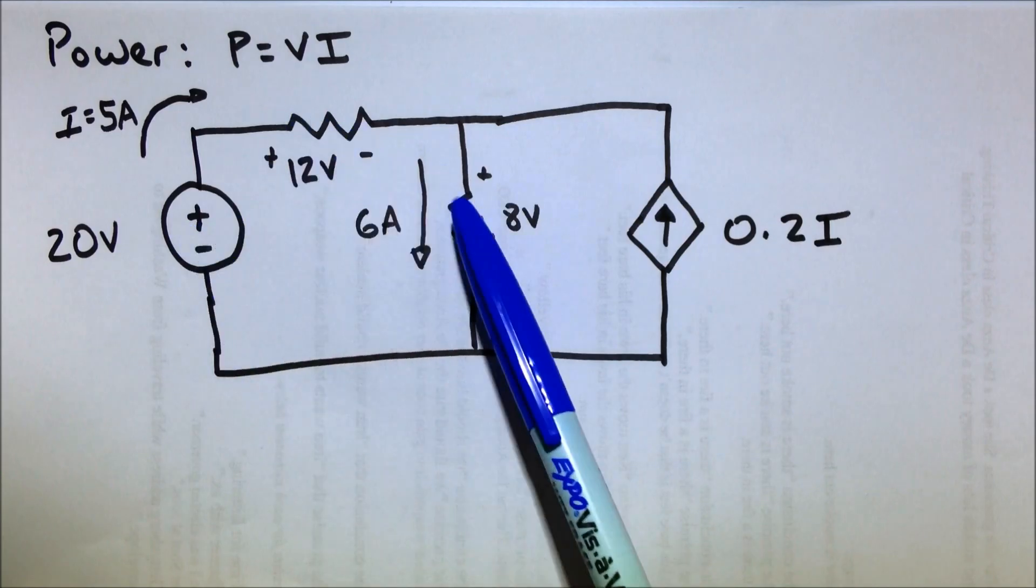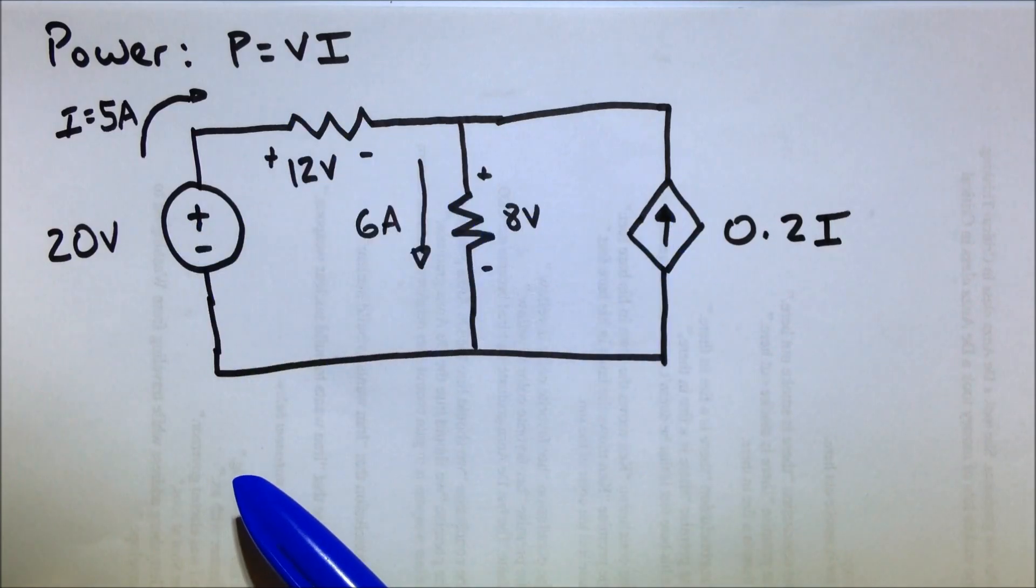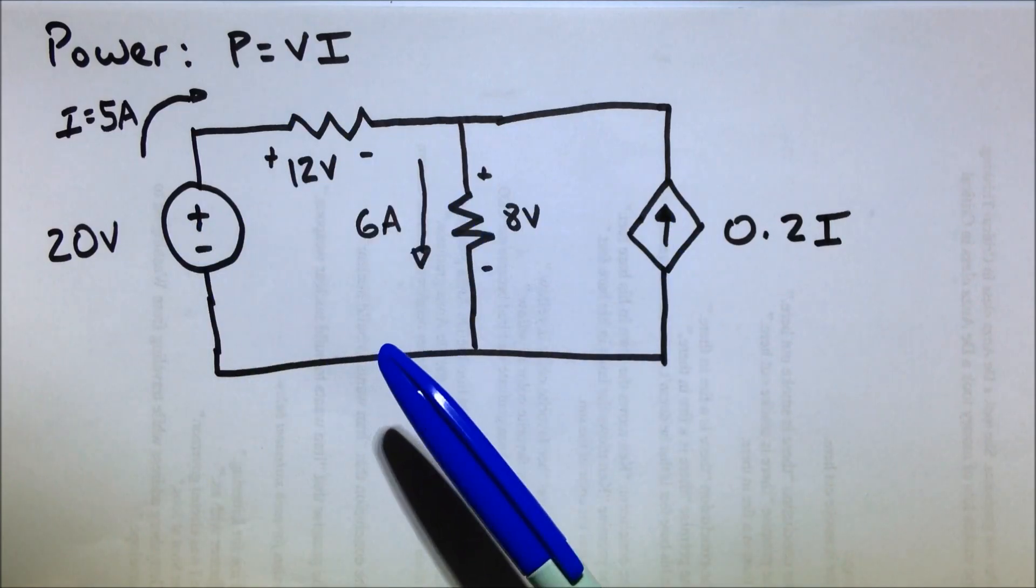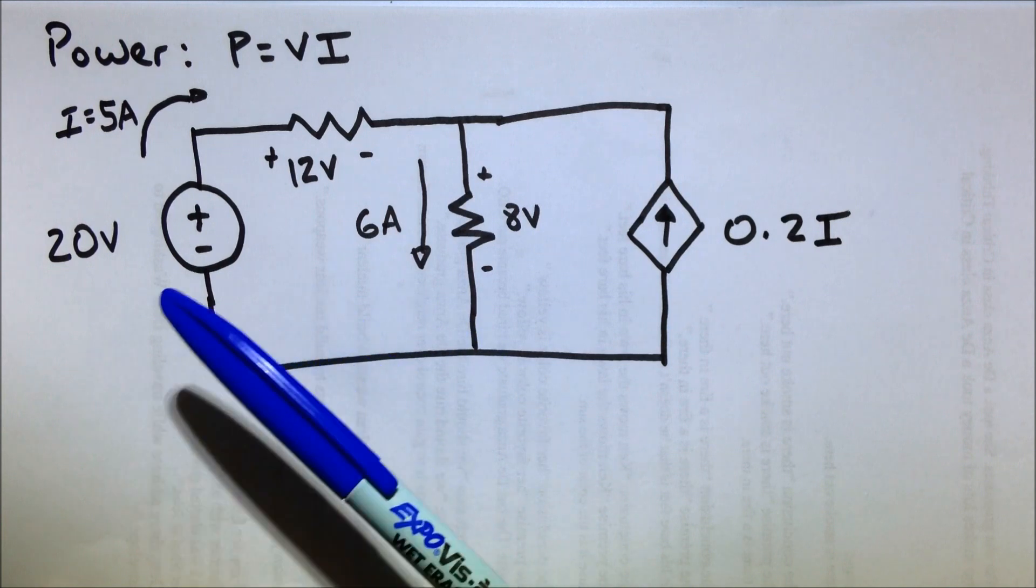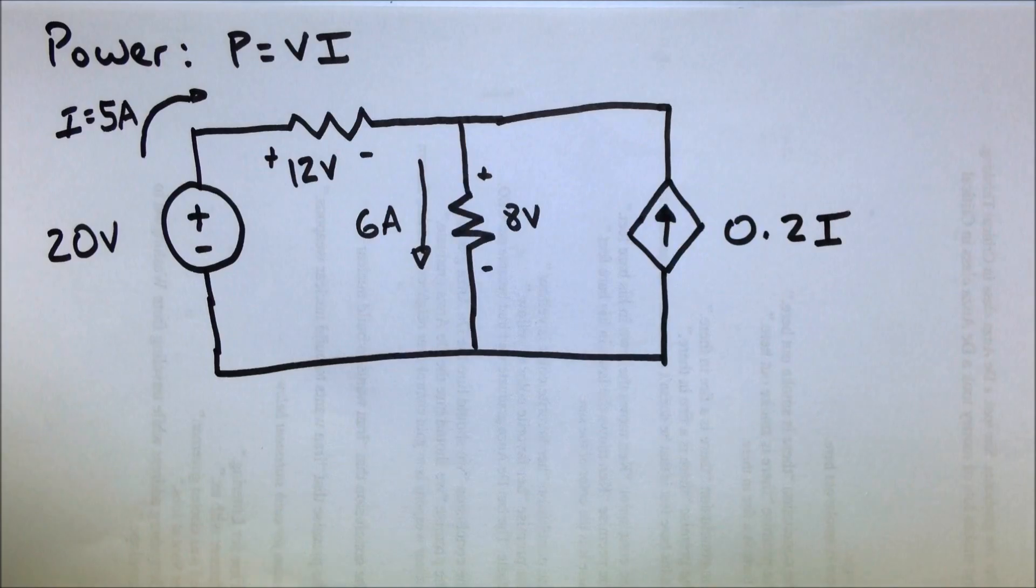As you can notice, we have four different elements in the circuit. But what we want to do in this problem is find out the power consumed or power supplied by each of these four components. So let's go ahead and label each of them so we know what we're solving for.